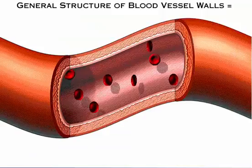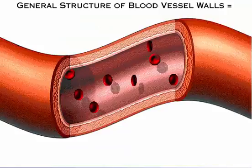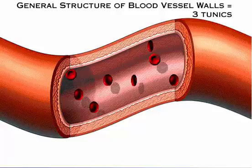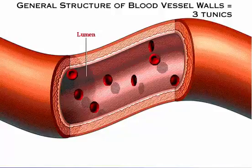Let's look at the general structure of blood vessel walls. The walls of all blood vessels, except the very smallest, are composed of three distinct layers, or tunics. The tunics surround the central blood-containing space within the blood vessel, called the lumen.